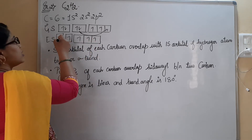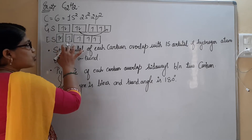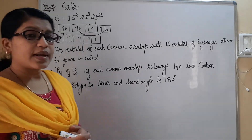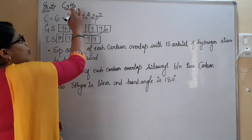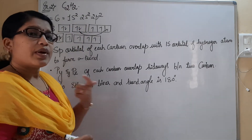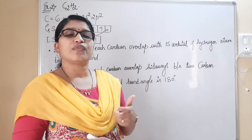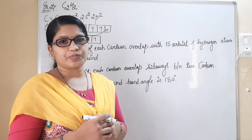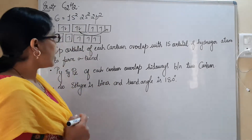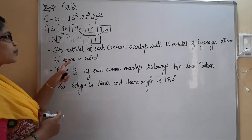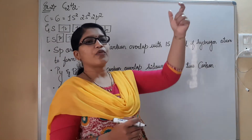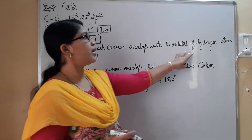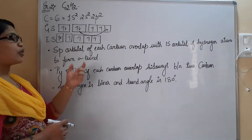We have one unpaired electron in the 2s orbital and the remaining in 2p orbitals. Now, how does this hybridization take place? Carbon has invited two hydrogen atoms for bonding. The SP orbital of each carbon atom overlaps with the SP orbital of the other carbon atom, and also with the s orbital of hydrogen atoms, to form sigma bonds.